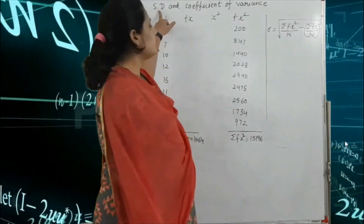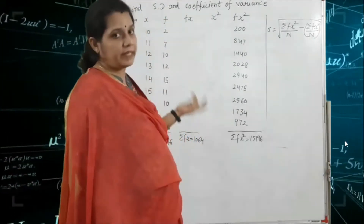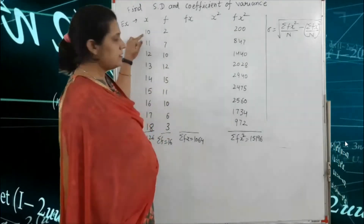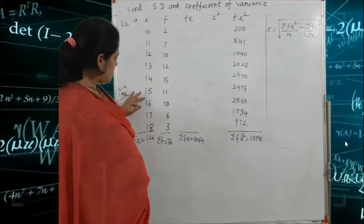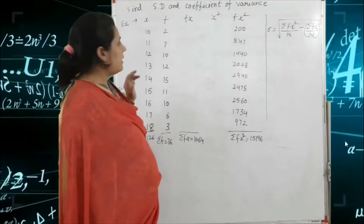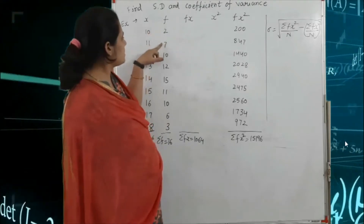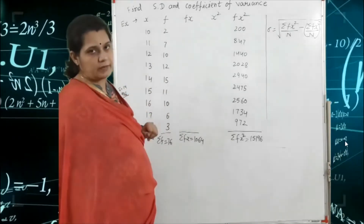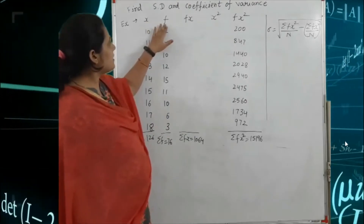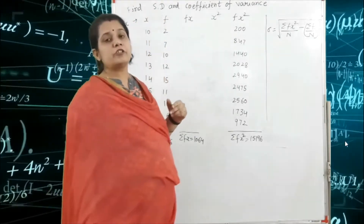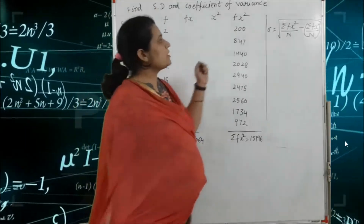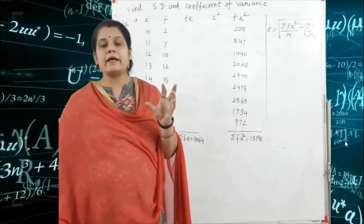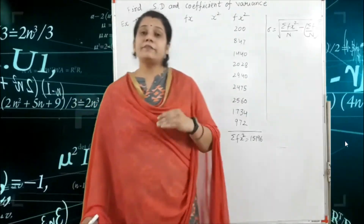The next example is: find the standard deviation and the coefficient of variation. We are given the value of x as 10, 11, 12, 13, 14, 15, 16, 17 and 18, and corresponding frequencies f as 2, 7, 10, 12, 15, 11, 10, 6 and 3. So here we are given both x and f, and we find the standard deviation and the coefficient of variation.